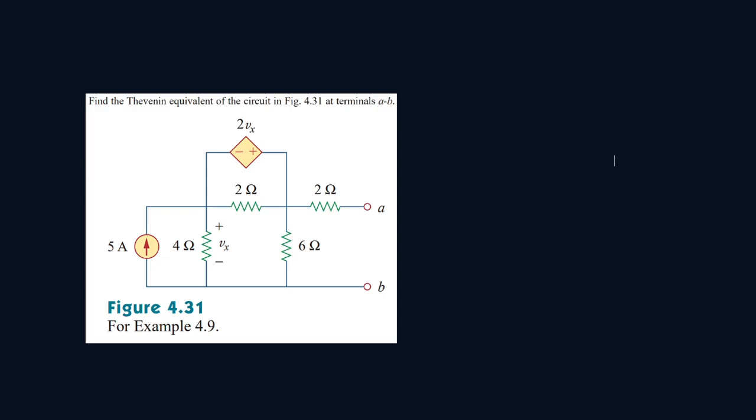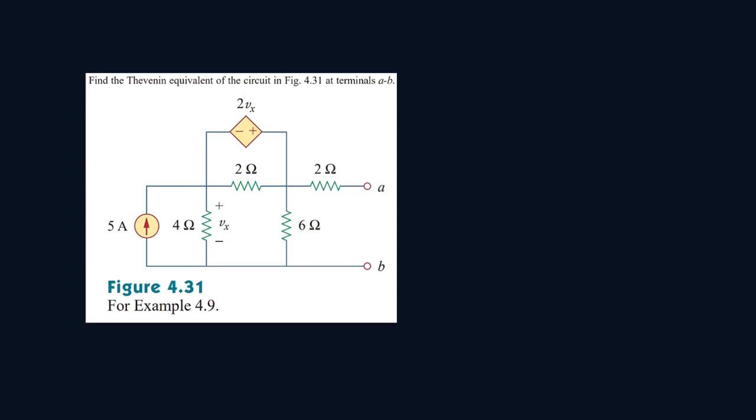Okay, so for the following circuit, we have to find the Thevenin equivalent from terminals A and B. So let's start by finding the Thevenin resistance. Okay, so the Thevenin resistance, we turn off all the sources.